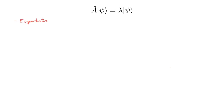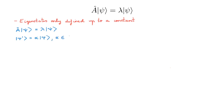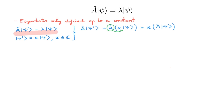The first property is that the eigenstates are only defined up to a constant. To see this, consider an eigenstate psi of an operator A with eigenvalue lambda. Then construct a new ket psi prime equal to alpha times psi, where alpha is a constant. How does A act on this new ket? We first write A acting on alpha psi, then move A through alpha because A is a linear operator, and then use the fact that psi is an eigenstate of A to get alpha lambda psi.